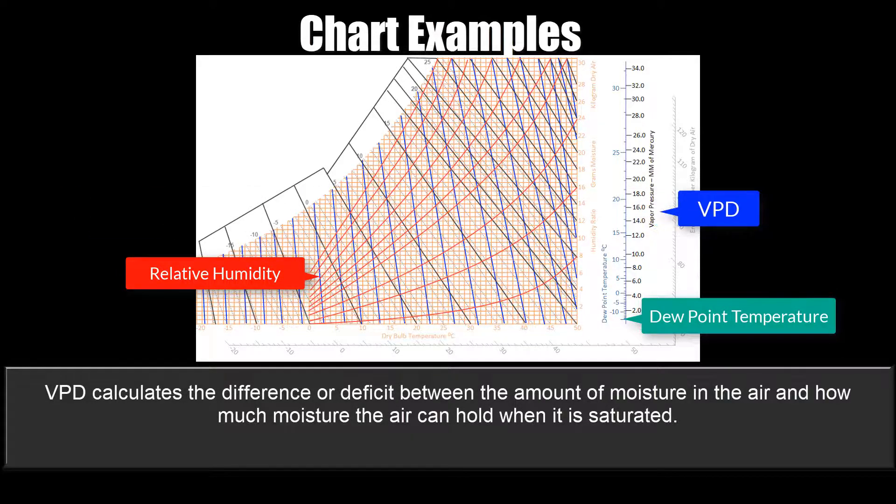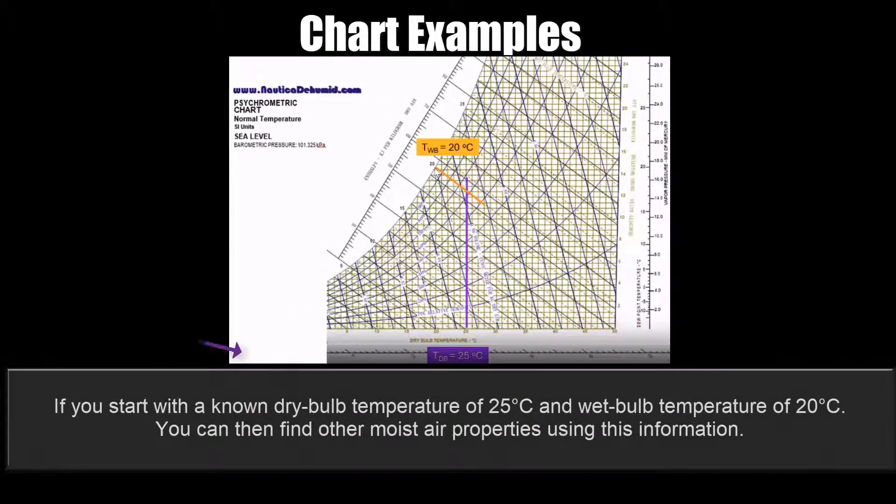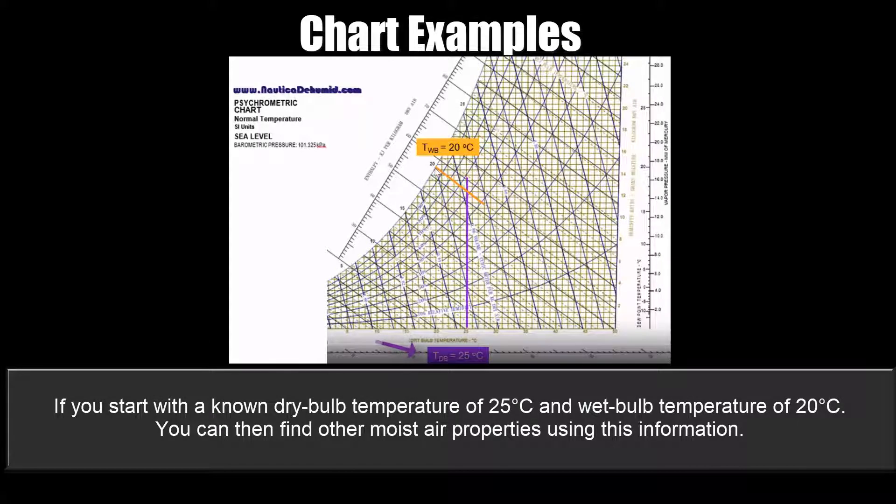VPD calculates the difference, or deficit, between the amount of moisture in the air, and how much moisture the air can hold when it's saturated. If you start with a known dry bulb temperature of 25 degrees C, and wet bulb temperature of 20 degrees C, you can then find other moist air properties using this information.